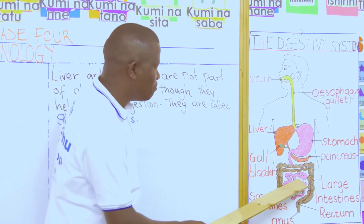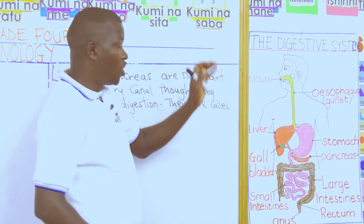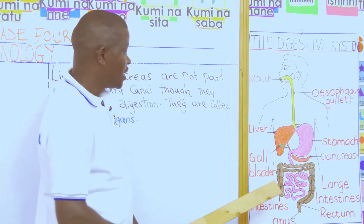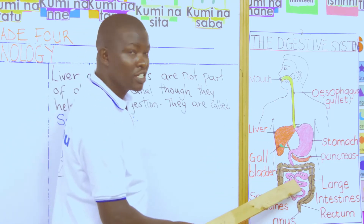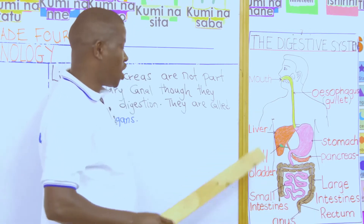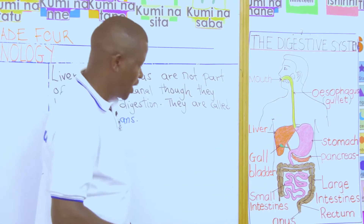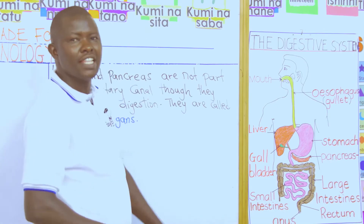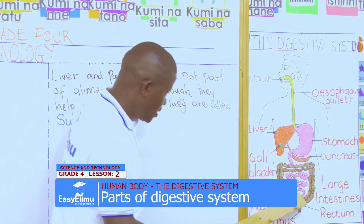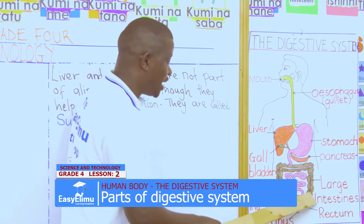Then we have the main part of the small intestine which is very long, and we call it the ileum. Here in the small intestines is where the food is now absorbed into our body after being finely digested. Then after that, the undigested and unabsorbed food goes to the large intestine.